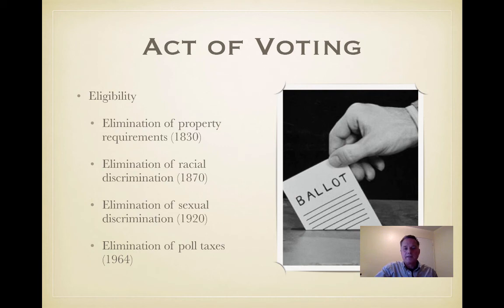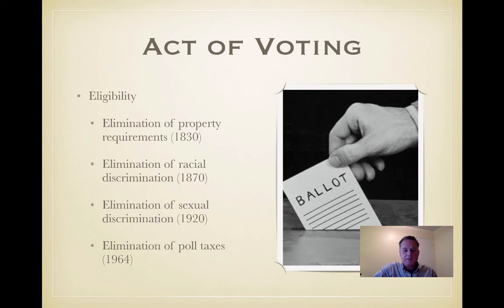In 1919, they passed the 19th Amendment. So by 1920, there was the elimination of sexual discrimination in voting. Then in 1964, we see the elimination of poll taxes, which were eliminated by the 24th Amendment to the Constitution.